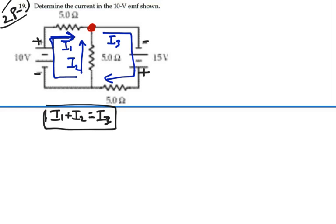Now I want to find I1, so I'm going to focus in on the branches that have, or on the loops that have I1 in them. And that will be the left loop and the outer loop.